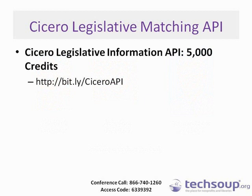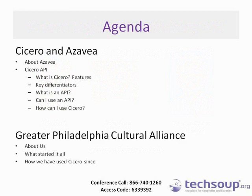Just really quickly before Abby gets started, I did want to send you a bit.ly link for the Cicero Legislative Information API, which is available through the TechSoup stock page. That is bit.ly forward slash Cicero API. I will also be sending that bit.ly out to everybody following the session. Abby is going to talk about Cicero and Xavier and how you can use that for geocoding and legislative matching, and then Thomas is going to go into a case study for the Greater Philadelphia Cultural Alliance. So Abby, take it away.